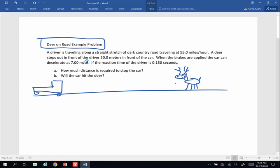So let's write down what we know. I've got a car that is originally traveling at 55 miles per hour. The deer steps out in front of the driver, 50 meters from the vehicle until you get to the deer, and the car can decelerate at a rate of 7.0 meters per second squared. So that happens to be my rate of deceleration. I'm going to make that a negative 7 meters per second squared because that is a deceleration.